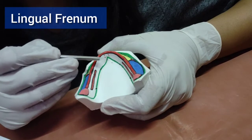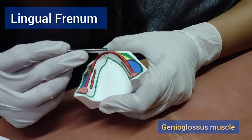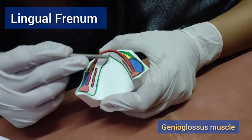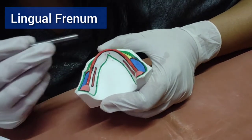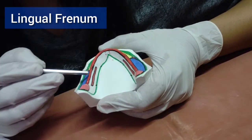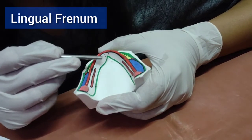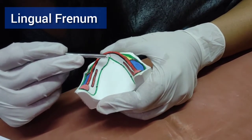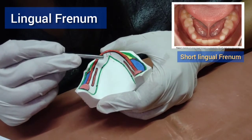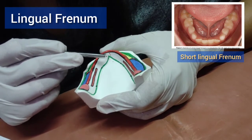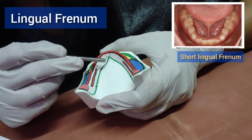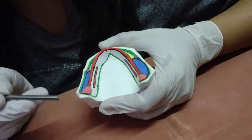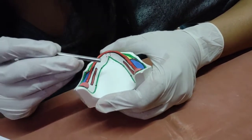The lingual frenum is a fibrous band of tissue that overlies the center of the genioglossus muscle. It is usually a narrow single band, but in rare patients it can be two in number. Careful clearance of the lingual frenum is very important because it is attached to the tongue — inadequate clearance may result in pain or displacement of the denture. The lingual border seal is critical to retention, and over-clearance may result in loss of seal.